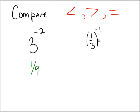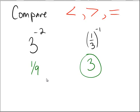On the right-hand side, we have 1 third being raised to the power of 1, which would be 1 third. But since it has a negative sign on the exponent, this is going to be reciprocated. So instead of having 1 third, you will actually have the reciprocal of 1 third, which is 3. Notice that 3 is larger among 1 ninth and 3, so the correct symbol is going to be the less-than symbol.